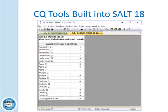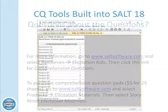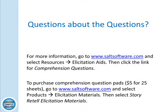You can also print it out, use it with a student, and go back later to link another comprehension question with it — there are a lot of advantages to having it within SALT. For more information, go to www.saltsoftware.com, select Resources, Elicitation Aids, and click on the link for comprehension questions. To purchase, they're $5 for 25 sheets per book at www.saltsoftware.com. Thank you and I hope this has been helpful.